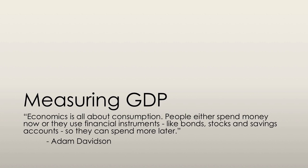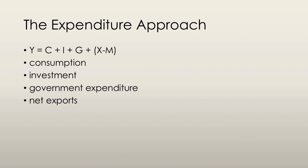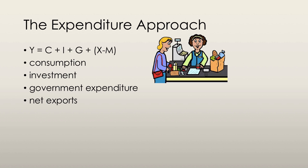Now we're going to take a look at how we actually measure GDP. To calculate GDP using the expenditure approach, we need to know a couple of things. First of all, we need to know what consumption expenditure is. Consumption expenditure is simply the expenditure by households on goods and services produced within the domestic country and, in fact, the rest of the world as well.